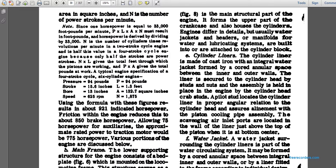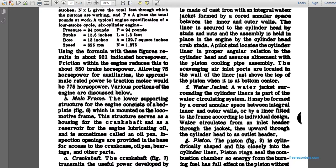A pilot stud locates the cylinder liner in proper angular relation to the cylinder head, ensuring alignment with the piston cooling pipe assembly. Scavenging air inlet ports are located in the wall of the liner just above the top of the piston when it is at bottom dead center. Water jackets surrounding the cylinder liners are part of the water circulating system, formed by the annular space between inner and outer walls.